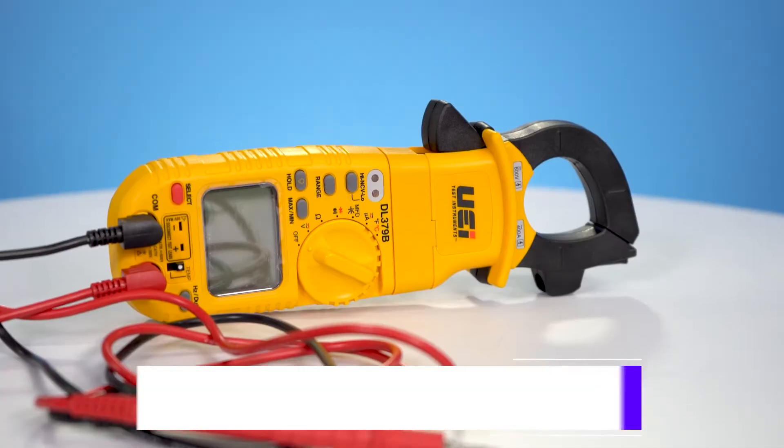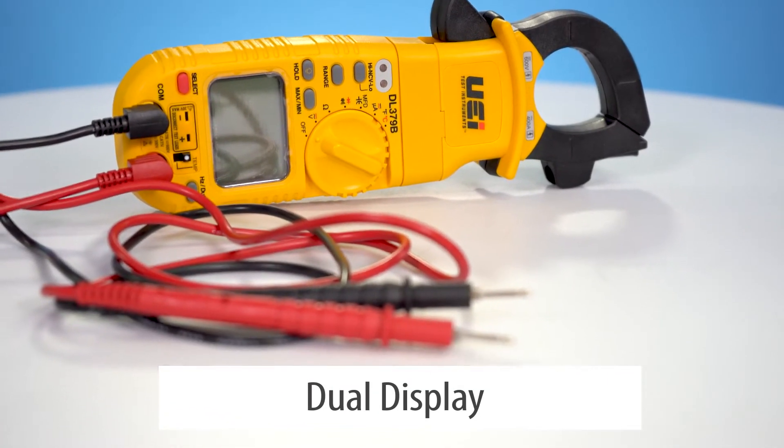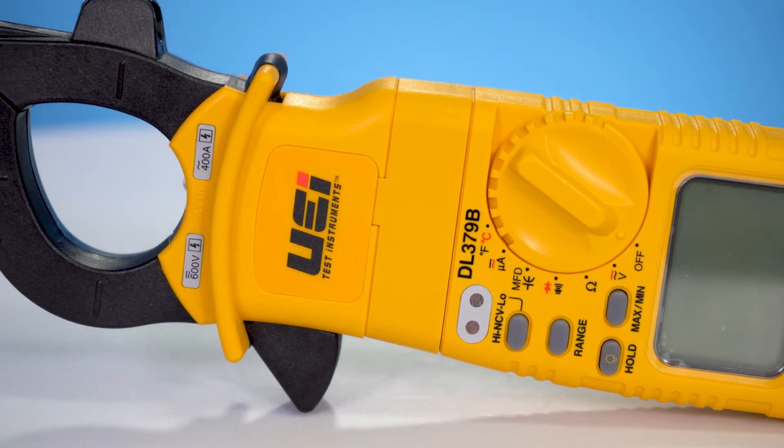So different style temperature. Now it just has one input or does it have two? This particular one just has one temperature input. Now as far as dual, it does have a dual display. Yeah. So one line is your amperage and then the other is depending on what you set it on, whether it be volts or frequency or what have you. And one thing you might have noticed there, this is set up with the dial there. So you can actually use it one-handed.